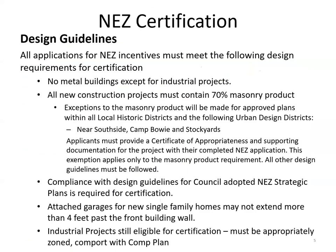The NEZ design guidelines are pretty standard and very straightforward. No metal buildings except industrial projects. All new construction projects must contain 70% masonry product. The exceptions to that are for local historic districts and the urban design districts that have design guidelines — that's near Southside, Camp Bowie, and Stockyards. Those applicants for the historic and urban design districts have to provide a certificate of appropriateness and supporting documentation for their project and submit that with their NEZ application. That exemption only applies to the masonry product; all the other guidelines they must still adhere to.